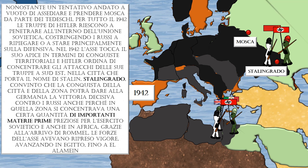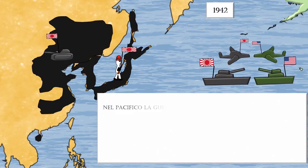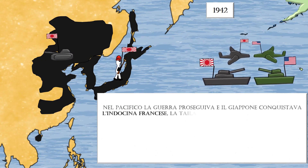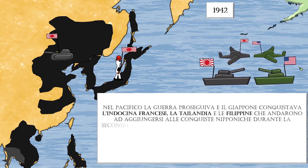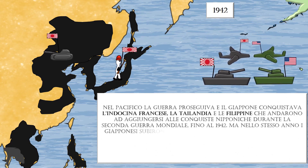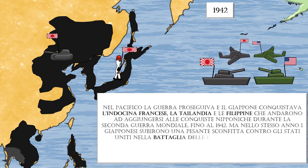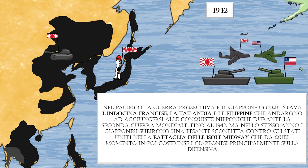In the Pacific, the war continued, and Japan conquered French Indochina, Thailand, and the Philippines, adding to its earlier World War II conquests. However, in 1942, Japan suffered a heavy defeat against the United States at the Battle of Midway Islands, which from then on forced the Japanese mainly onto the defensive.